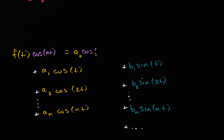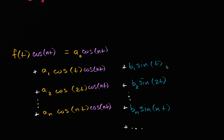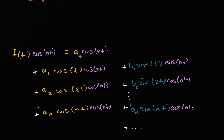You might see where this is going, especially because we took all that trouble to figure out the properties of definite integrals of products of cosines and sines. Every term gets multiplied by cosine of nt, and this is going to be true for all of the terms — there's an infinite number of terms here, which is what that dot dot dot is representing.